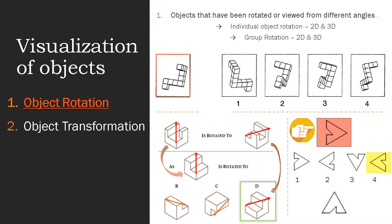Let's try rotating to other orientations as well. This orientation is not matching. Another orientation is somewhat matching with option 1, but the line is different. So what we can confirm is that option 4 is the right answer. This covers individual object rotation in both 2D and 3D.